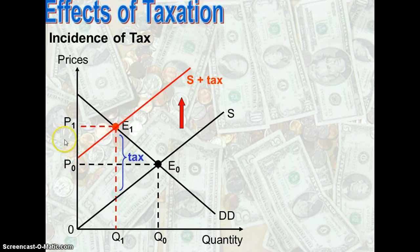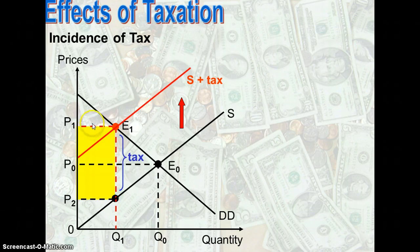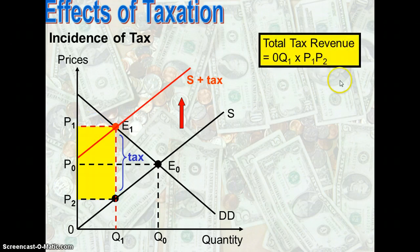The price increases from P0 to P1, and the quantity produced or consumed in the market decreases from Q0 to Q1 — there is a decrease in the equilibrium quantity. P1 will be the price paid by the consumer; for the consumer to purchase the product, they will pay at price P1. The whole yellow-colored area is actually the tax revenue generated for the government — the total tax revenue, calculated by the vertical distance multiplied by the amount of the product being sold in the market.